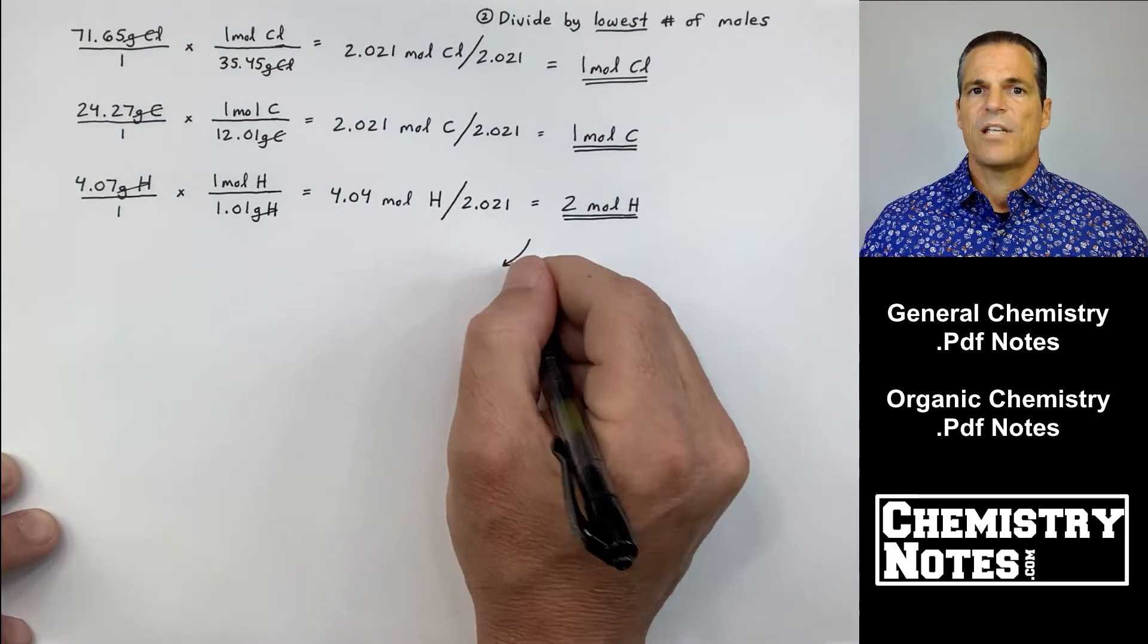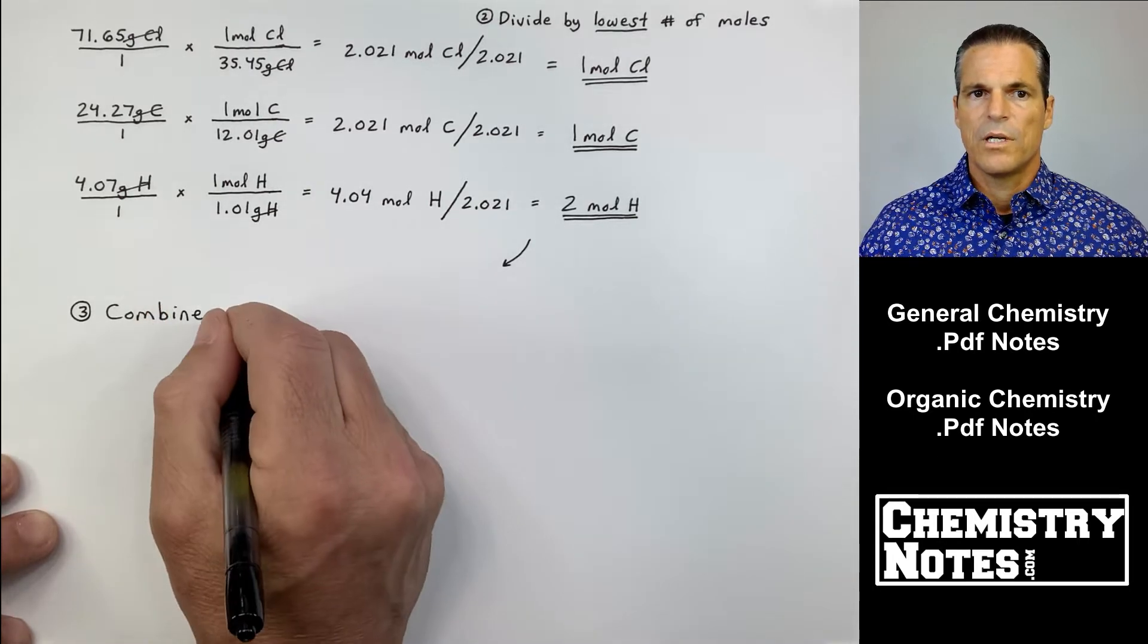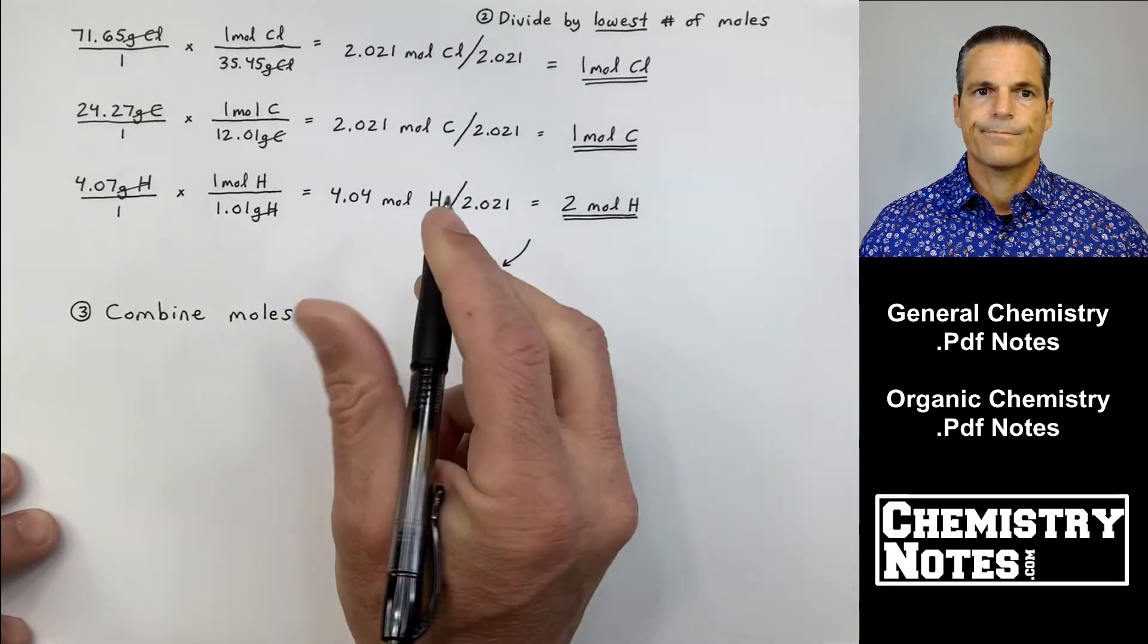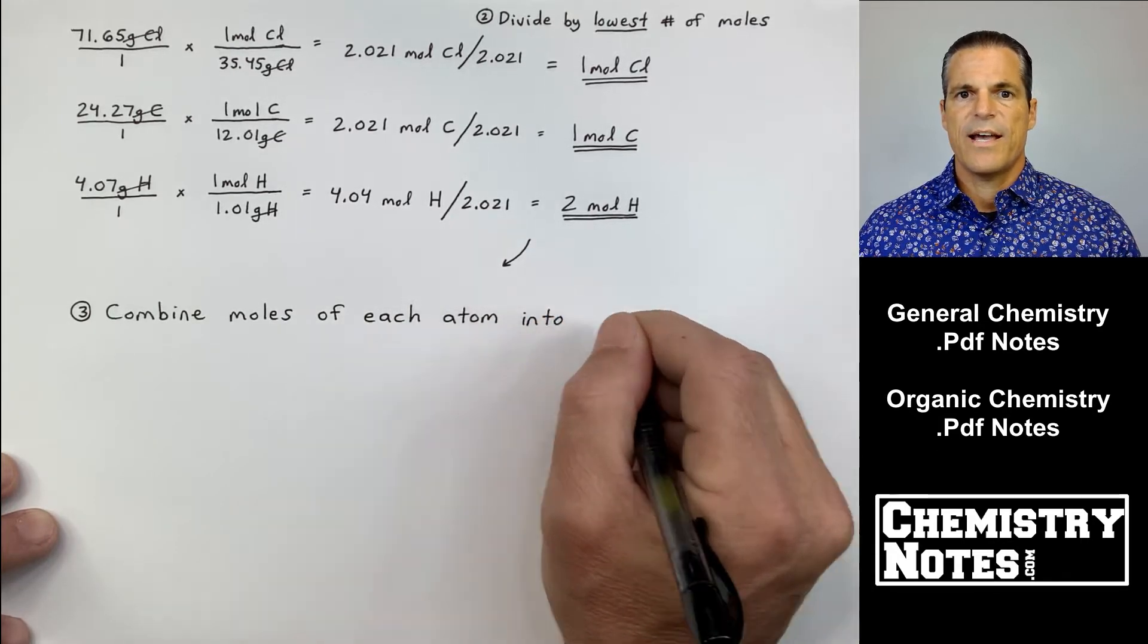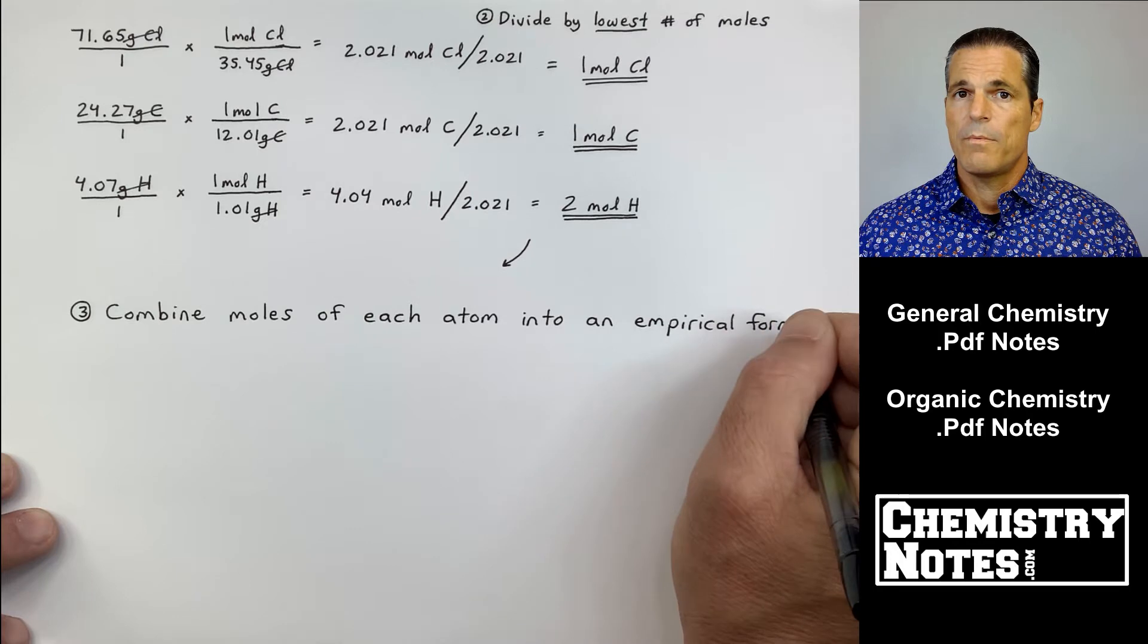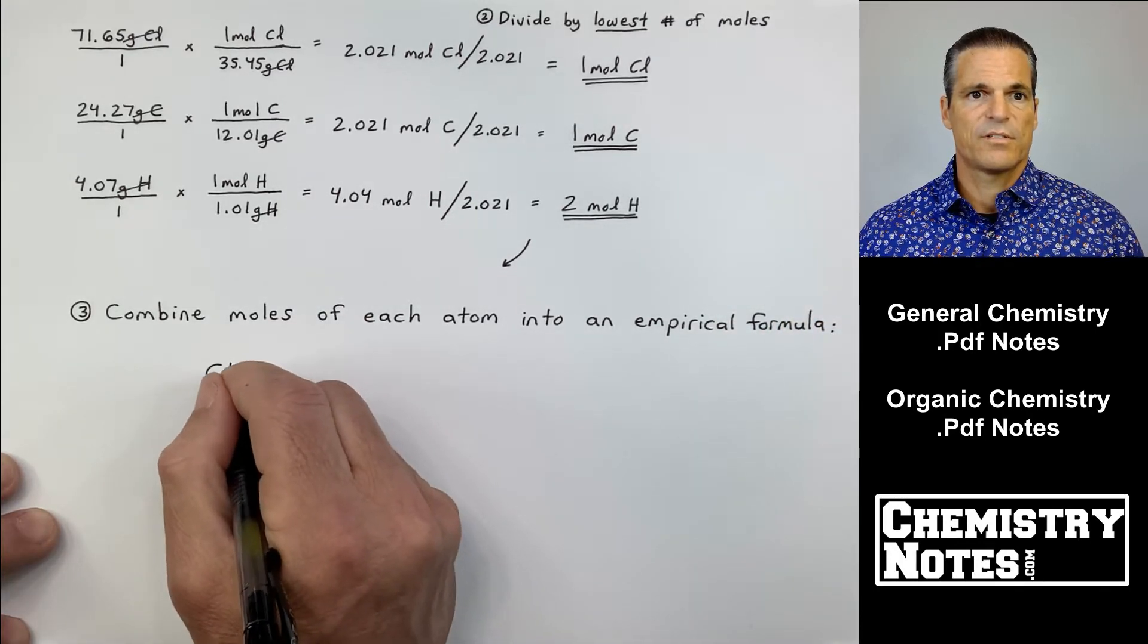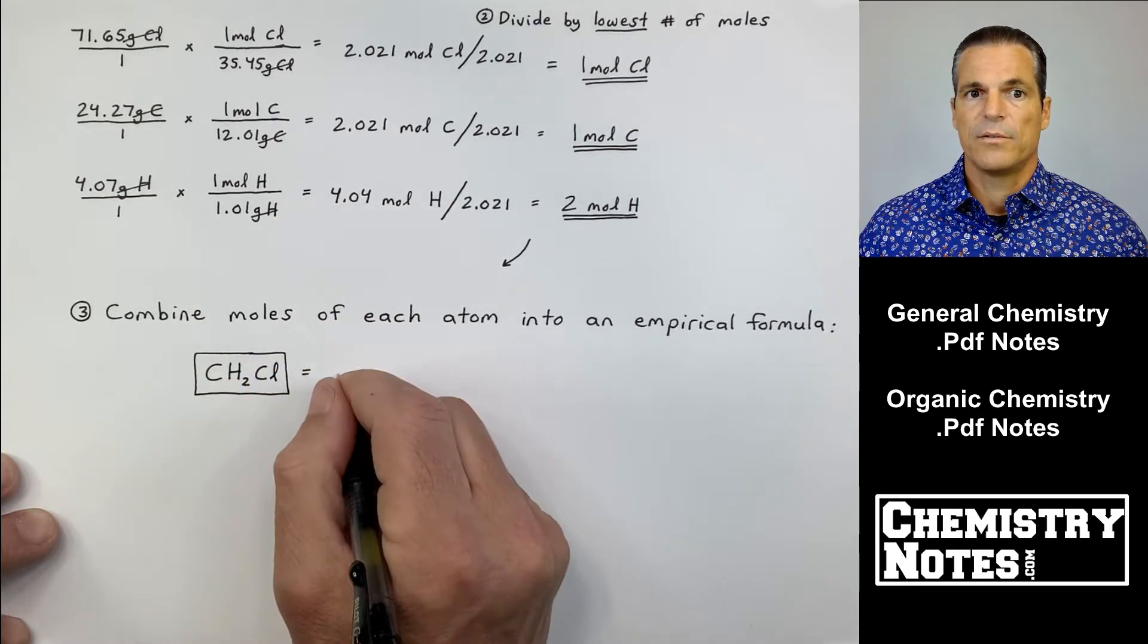We end up with one mole of Cl, one mole of carbon, and two moles of hydrogen. I double underline those. We're going to take those three double underlines, and in mini rule number three, we're going to combine the moles of each atom into an empirical formula.